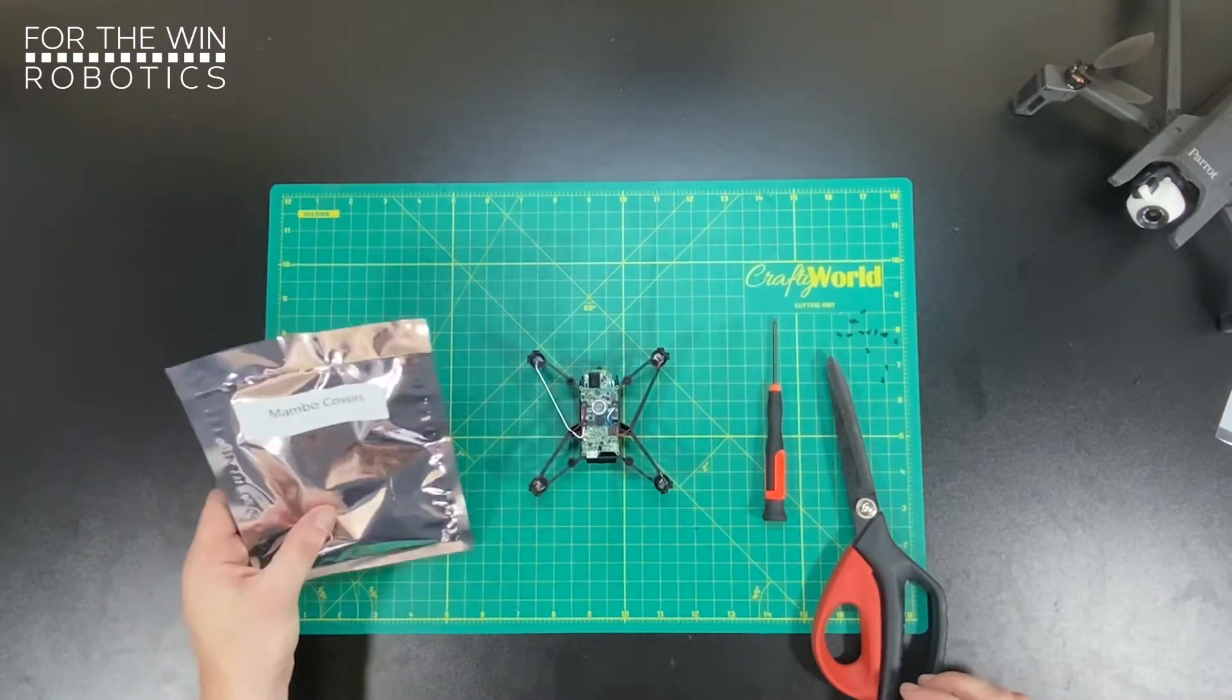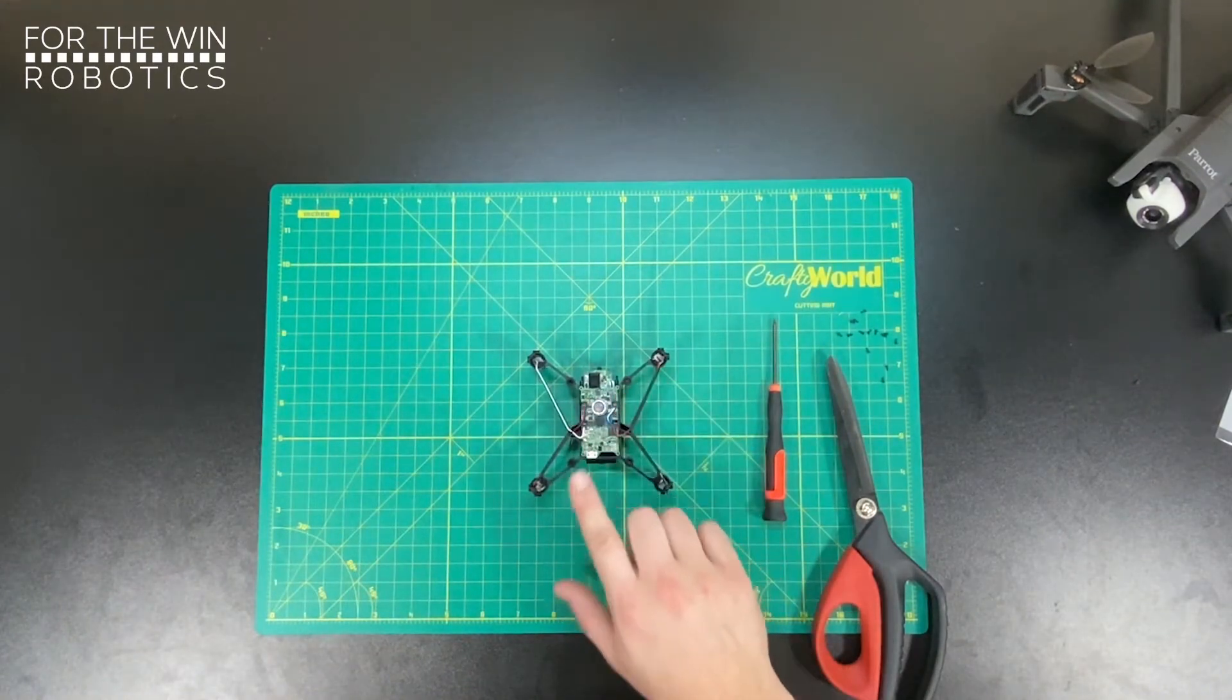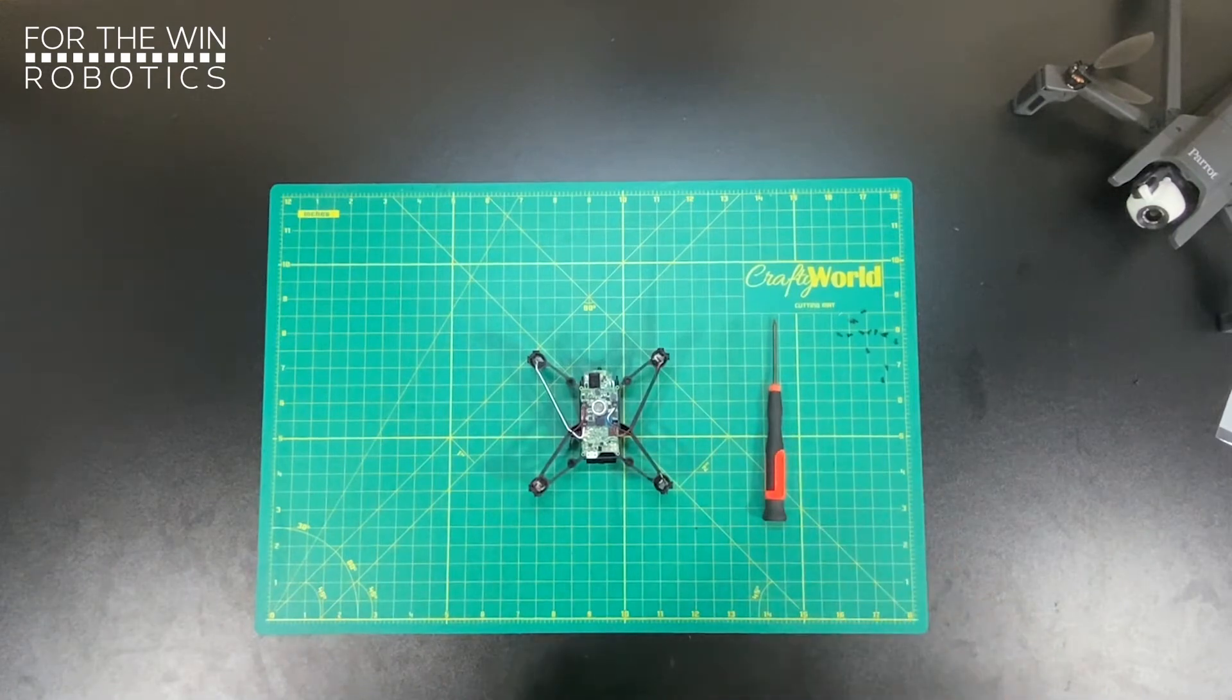Okay, so the next step, you're going to open your Mambo covers because we've connected the motors to the PCB, but the PCB is not secure yet to the frame of the drone.